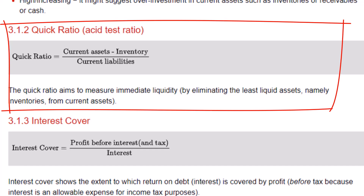The quick ratio is very similar to the current ratio, but here we apply the concept of prudence and eliminate inventory from the calculation. Inventory is the least liquid of our current assets — it may be obsolete or damaged. So if we want a prudent view of the company, let's eliminate inventory from the picture.